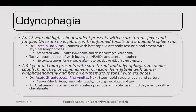Comparing with a 44-year-old man who develops sore throat and odynophagia, denying cough, rhinorrhea, or conjunctivitis. On exam, febrile with tender lymphadenopathy and an erythematous tonsil with exudates — this is acute streptococcal pharyngitis. Use the Centor criteria: fever, lymphadenopathy, absence of cough, exudates, and age. Next step is rapid strep test and culture. Treat with oral penicillin or amoxicillin, unless antibiotics were used within 30 days — then use oral amoxicillin-clavulanic acid.